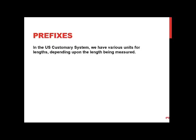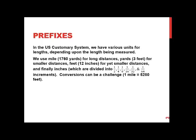In the U.S. customary system, we have various units for lengths depending on what's being measured. We have the mile, which is 1,760 yards, for long distances. We have yards, which are 3 feet, for smaller distances. We have feet, which are 12 inches. And for precise measures, we have inches, which are divided into half-inch, quarter-inch, eighth-inch, and so on.